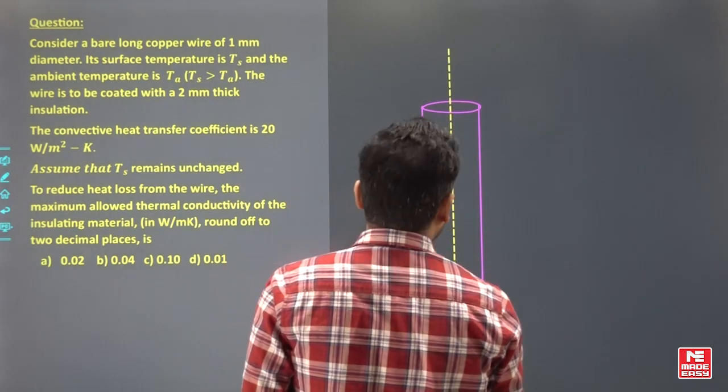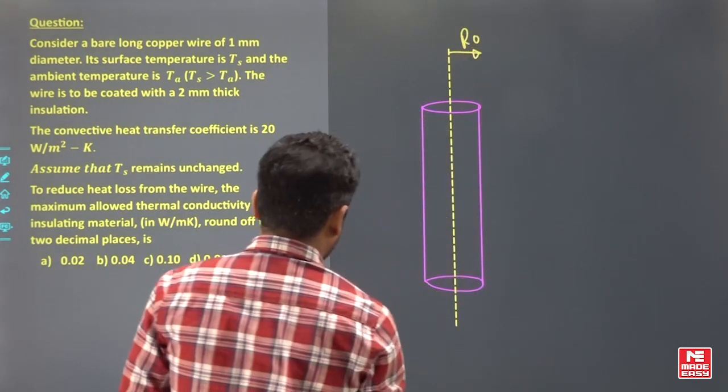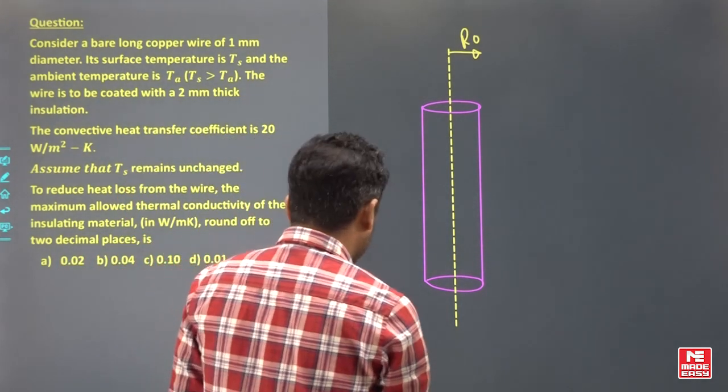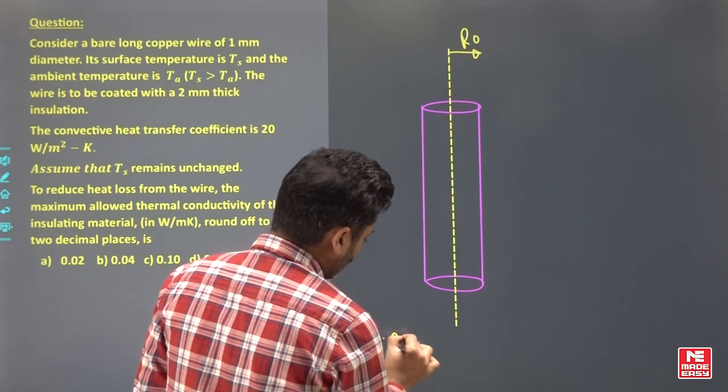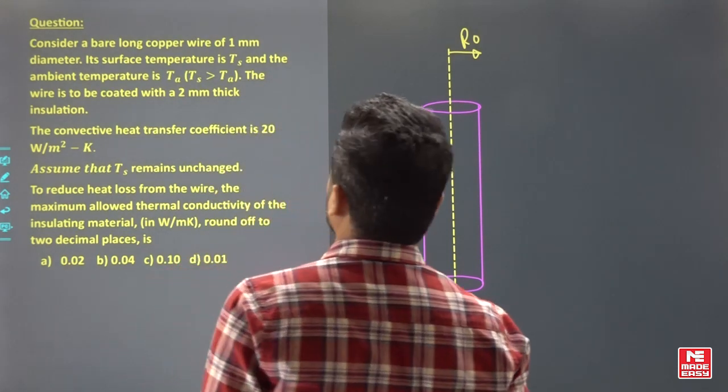Let's say the radius, I'm taking as capital R_O. So capital R_O is given how much? It's 1 mm, so radius will be 0.5 mm, that is 0.0005 meter.